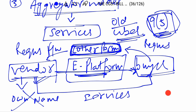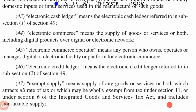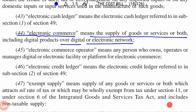We are now reading Section 2, Clause 44 and Section 2, Clause 45, which are relevant to Section 9(5). Section 2, Clause 44 — Electronic Commerce — means the supply of goods or services or both over a digital or electronic network. Basically, goods or services supply over an electronic or digital network, including digital products. Digital products are products which are electronically transmitted, like software, information which can be forwarded by emails or messages, or downloaded — like software which can be downloaded. So e-commerce will cover digital products.